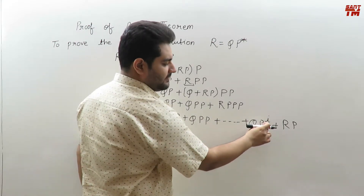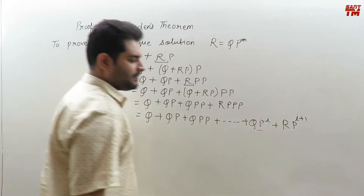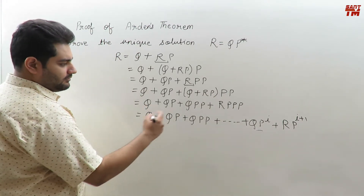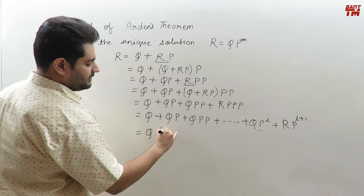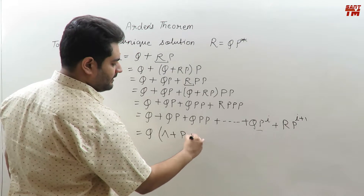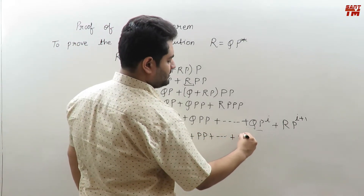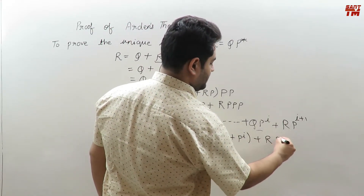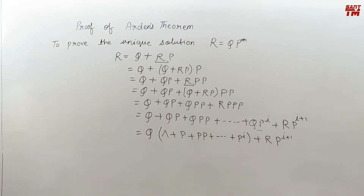So the pattern shows 2 P's, 3 P's — meaning if there are i P's, then R will contain i+1 P's. This is how the expansion continues. Taking Q common from these terms, we get: Q times (null + P + PP + ... + P^i) plus R·P^(i+1). This is what we have after taking Q common.